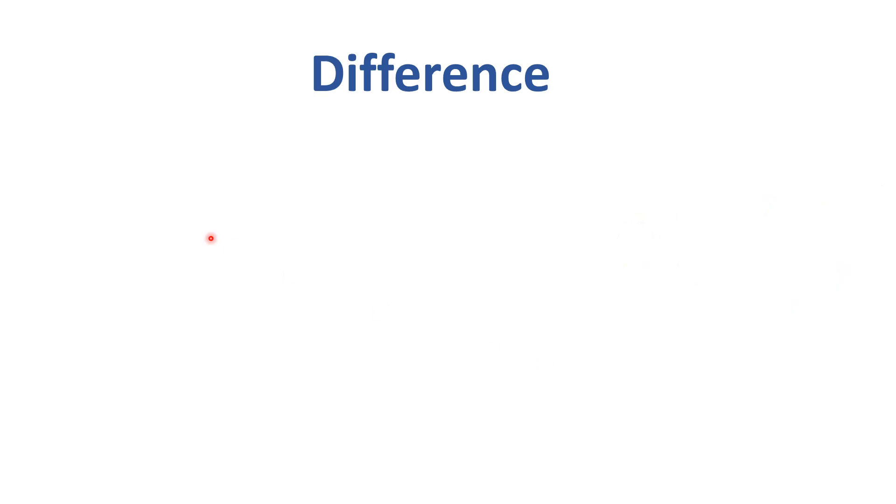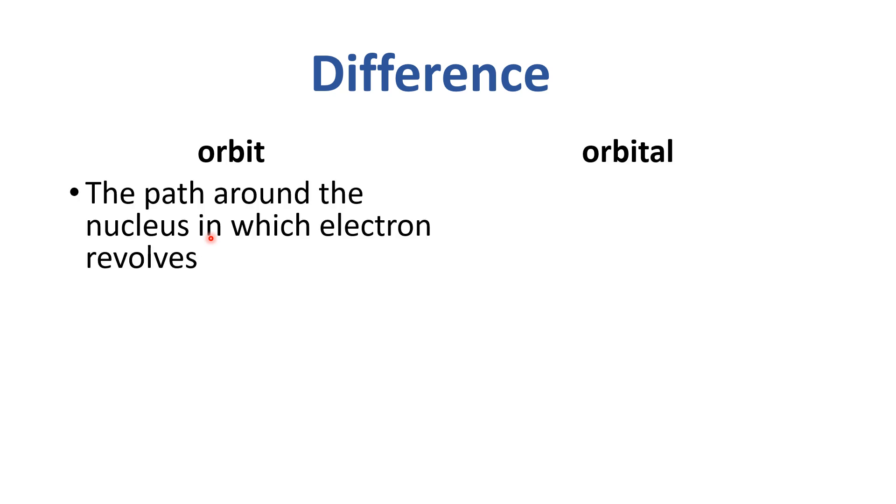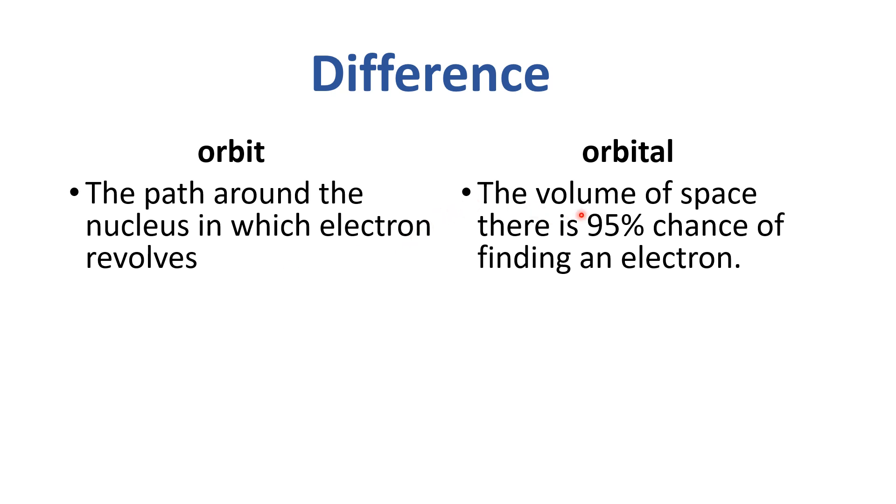As orbit and orbitals are very confusing terms, let's see the differences. Orbit is the path around the nucleus in which electron revolves. Orbit wo path hai jis mein electron revolve karta hai. Jabki orbital is the volume of space where there is 95% chance of finding electron.